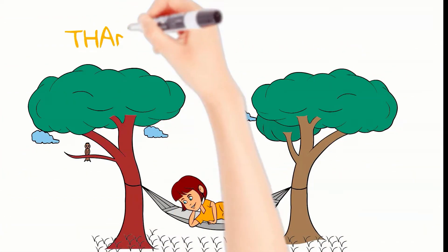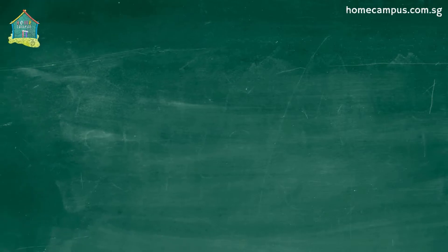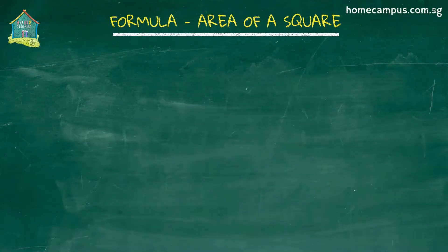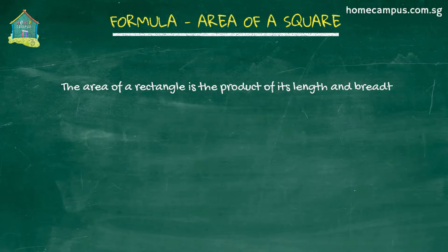Alright, now let's dive straight into this tutorial. In a previous tutorial we derived the formula to find the area of a rectangle. We found out that the area of a rectangle is the product of its length and breadth. Check this link above to learn more about it.